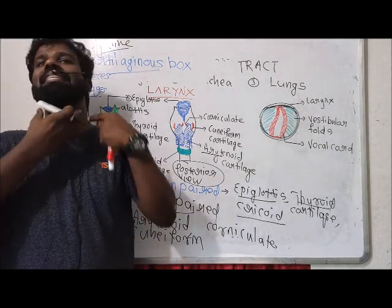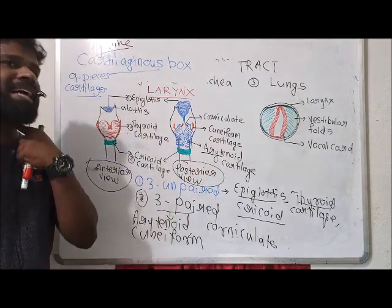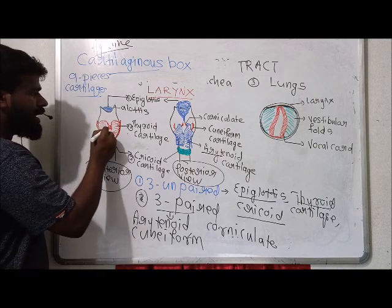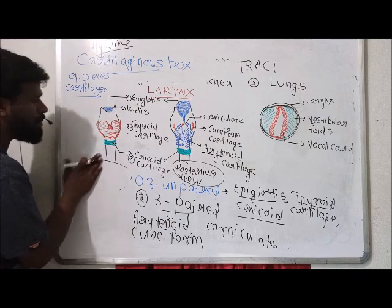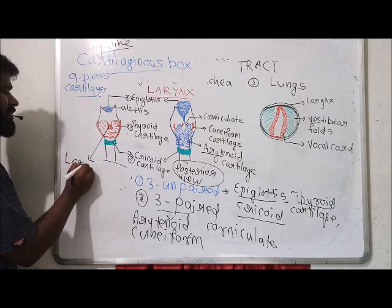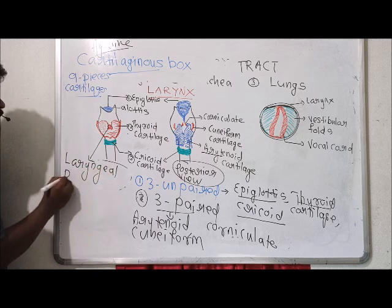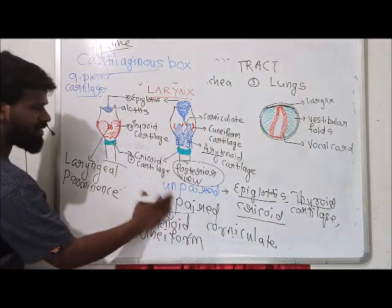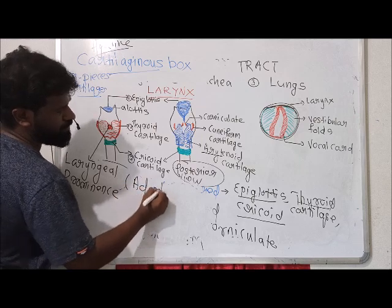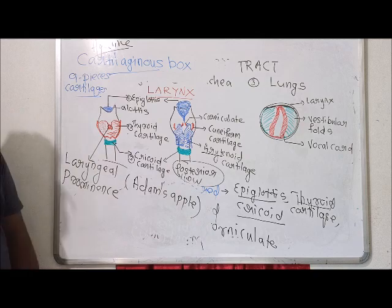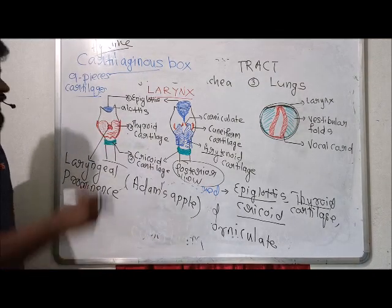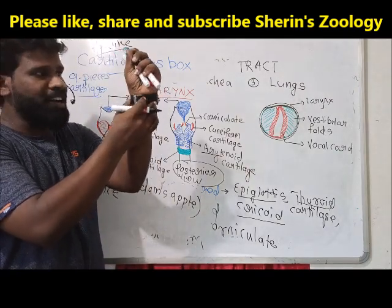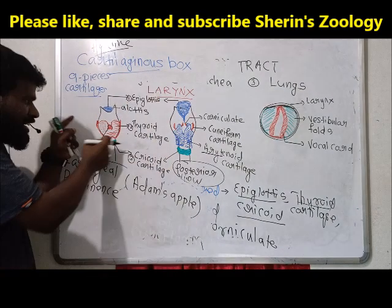The thyroid cartilage covers the ventral and sides of the larynx. A prominence from this thyroid cartilage is called the laryngeal prominence, also known as Adam's apple. The third unpaired cartilage is the cricoid cartilage, found at the base of the larynx.